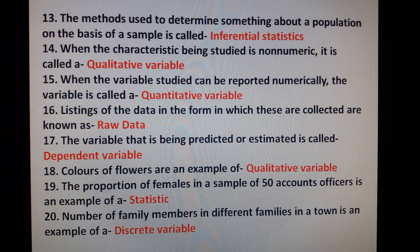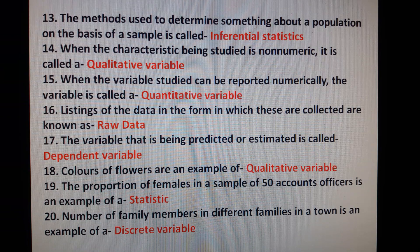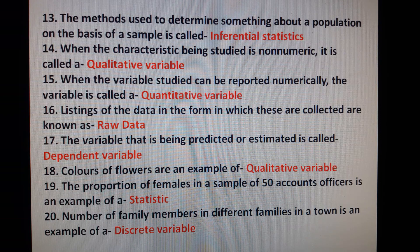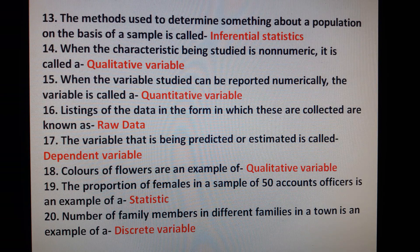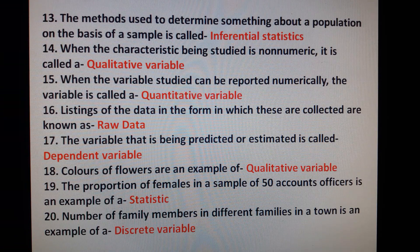14. When the characteristics being studied is non-numeric, it is called qualitative variable. 15. When the variable studied can be reported numerically, the variable is called a quantitative variable. 16. Listing of the data in the form in which these are collected are known as raw data.